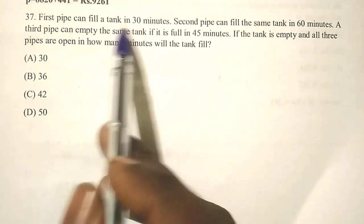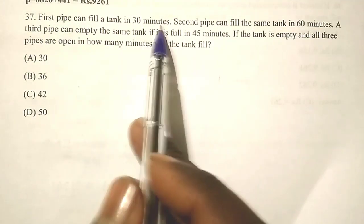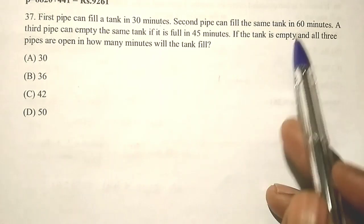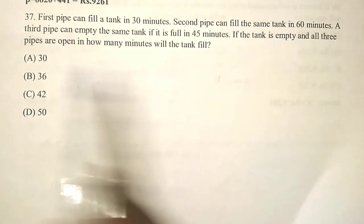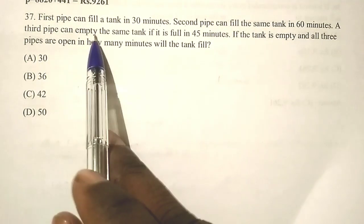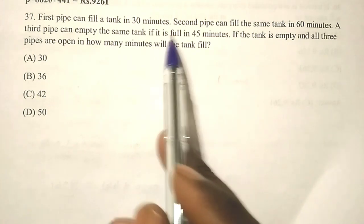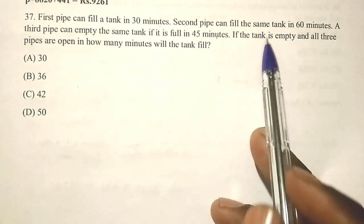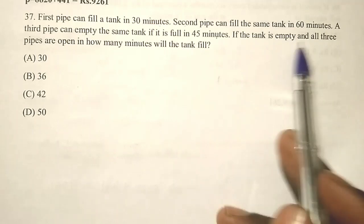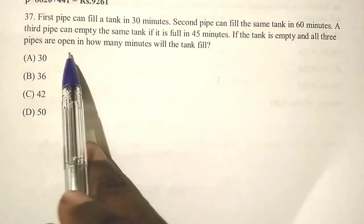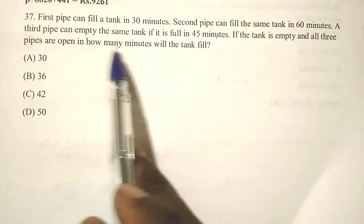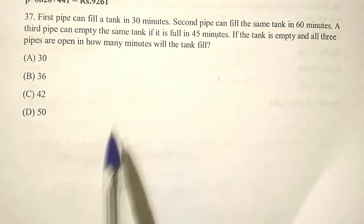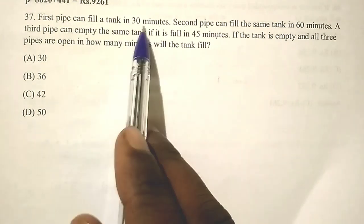The first pipe can fill your tank in 30 minutes, the second pipe can fill the tank in 60 minutes, and the third pipe can empty the same tank if it is full in 45 minutes. If the tank is empty and all three pipes are open, in how many minutes will the tank be filled?